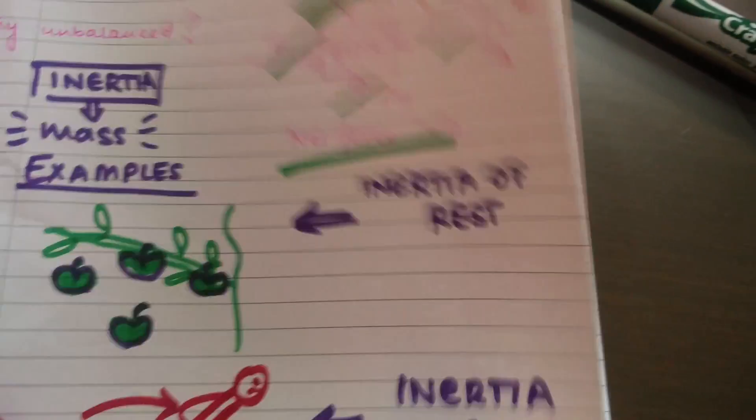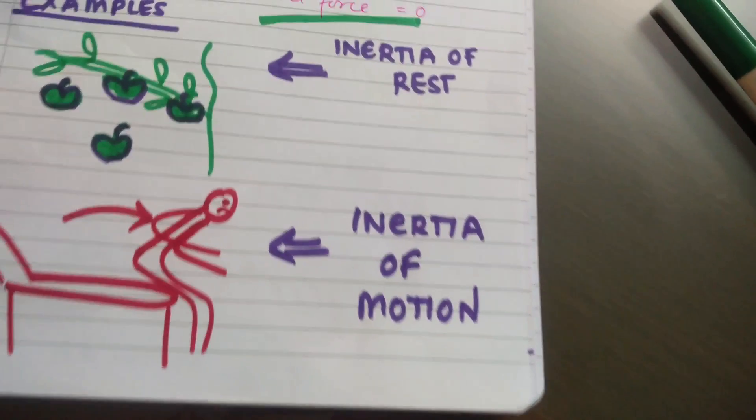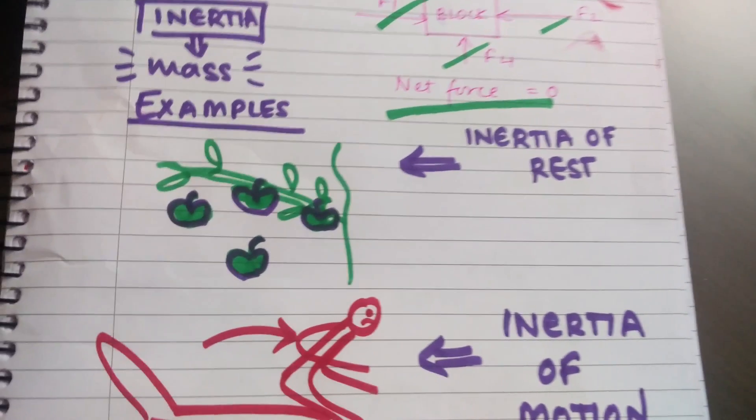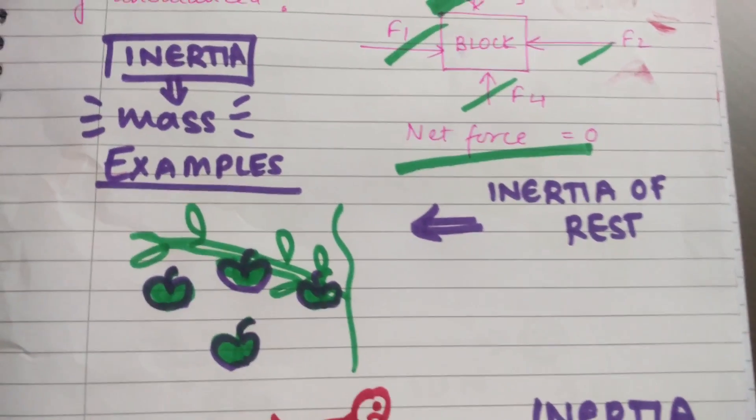Now, there are two types of inertia: inertia of rest and inertia of motion. Inertia of rest is the tendency to remain in the state of rest, and inertia of motion is the tendency to remain in the state of motion. This can be understood by very simple, everyday, practical examples.